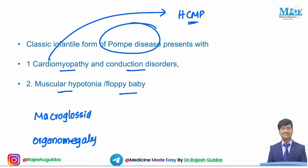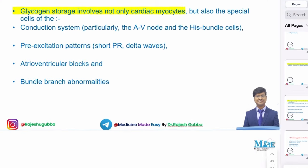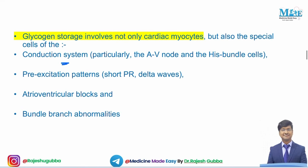Pompe's is a glycogen storage disorder affecting cardiac myocytes and the conduction system. Conduction disorders involve the AV node and His bundle, with pre-excitation patterns (short PR interval), AV blocks, and bundle branch abnormalities. Pompe's is GSD type 2 with alpha-1,4-glucosidase deficiency, while type 1 is Von Gierke's. Pompe's is associated with hypertrophic cardiomyopathy.